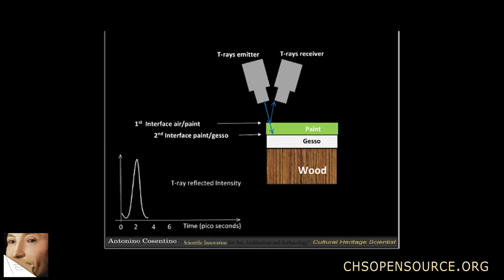Part of the pulse is bounced off, reaches the receiver and shows up as a new peak on the T-Ray spectrum. If the pulse takes one picosecond to travel through the paint, then the new peak will show up after four picoseconds.